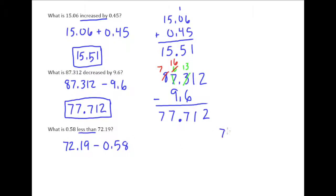So we've got 72.19 minus 0.58. 9 minus 8 is 1, but then we need to do some borrowing for the tenths digits. So we'll borrow 1 from the 1's place, make that into an 11. So 11 minus 5 is 6.